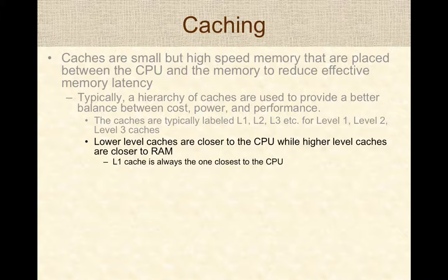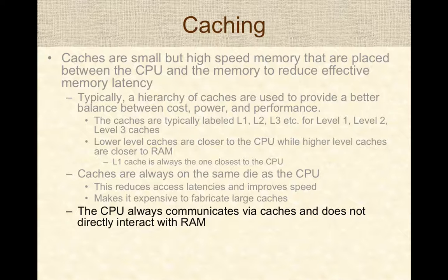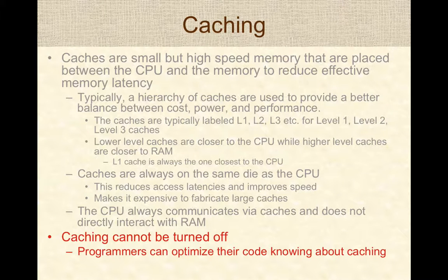Lower level caches are typically closer to the CPU, and the L1 cache is always closest to the ALU. Caches are always on the same die as the CPU to reduce access latencies. The CPU always communicates via caches if they are present and doesn't directly interact with RAM. Caching cannot be turned off on modern CPUs, so programmers need to be aware of caching and can optimize their code to make effective use of caches.